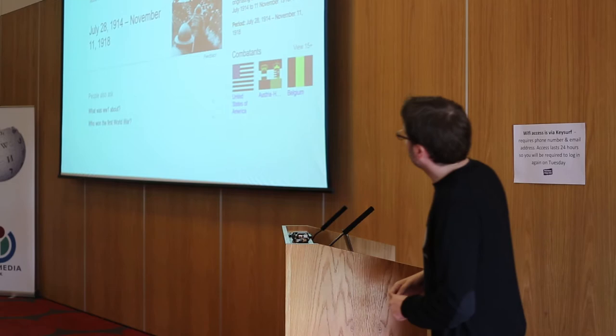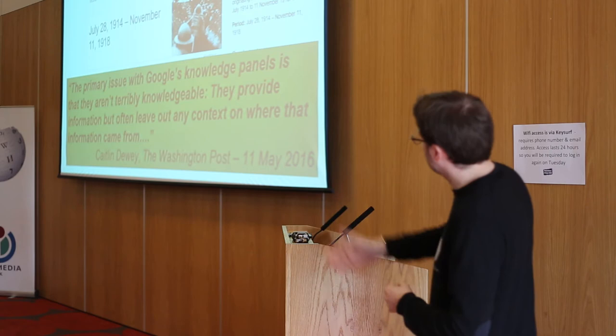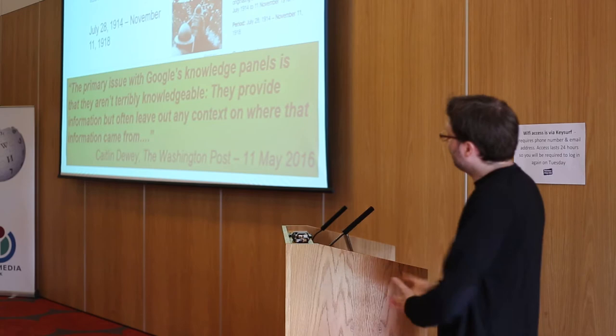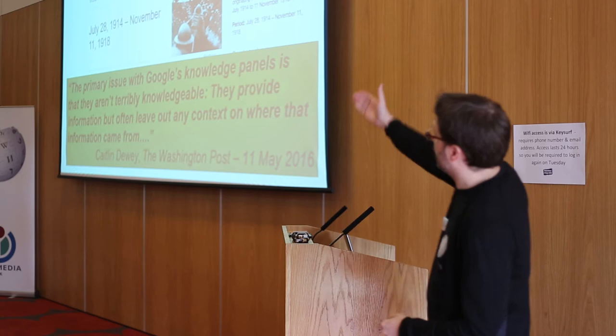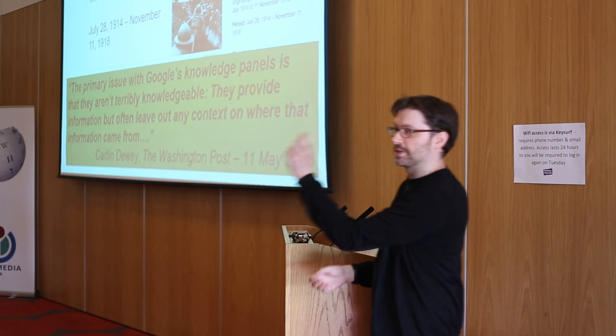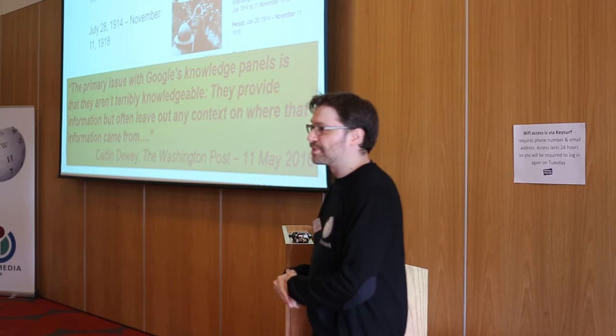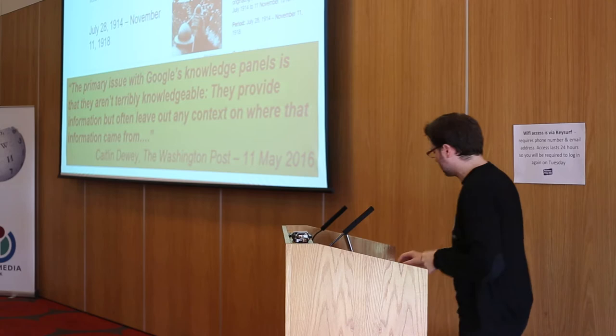The problem with Google's knowledge graph is that it's not terribly knowledgeable. The Washington Post in May pointed this out, saying Google provides information but often leaves out the context of where that information came from. For that first panel showing July 28th, 1914, there's nothing there — it's probably taken from Wikidata, but it would be nice if it were acknowledged so we could double check. There is a link to Wikipedia on the right, but Google wants to be more authoritative and doesn't link to its sources, which isn't very helpful.